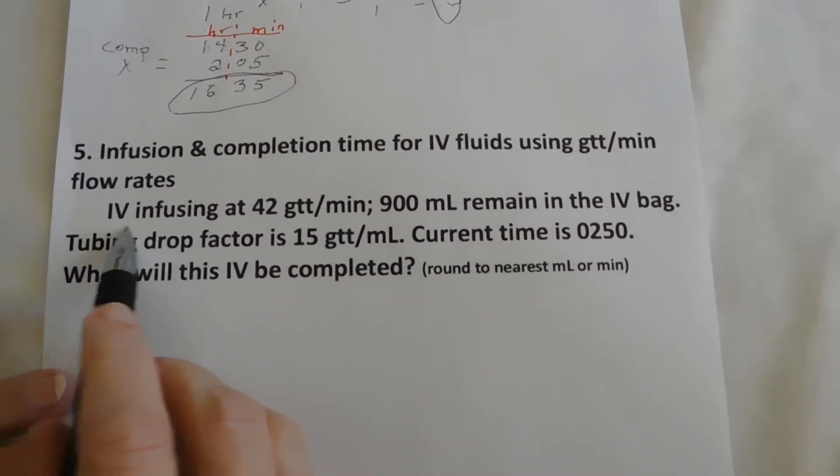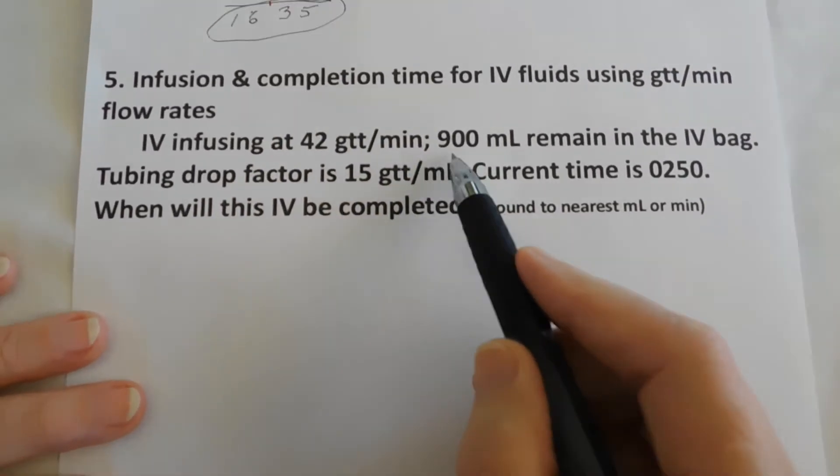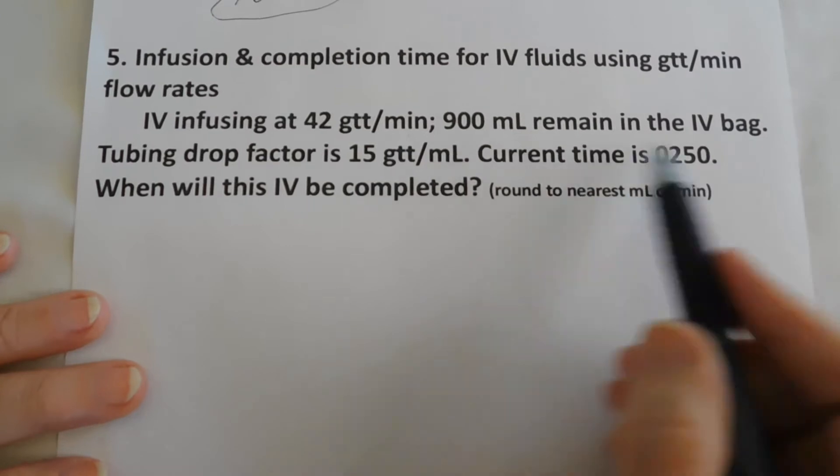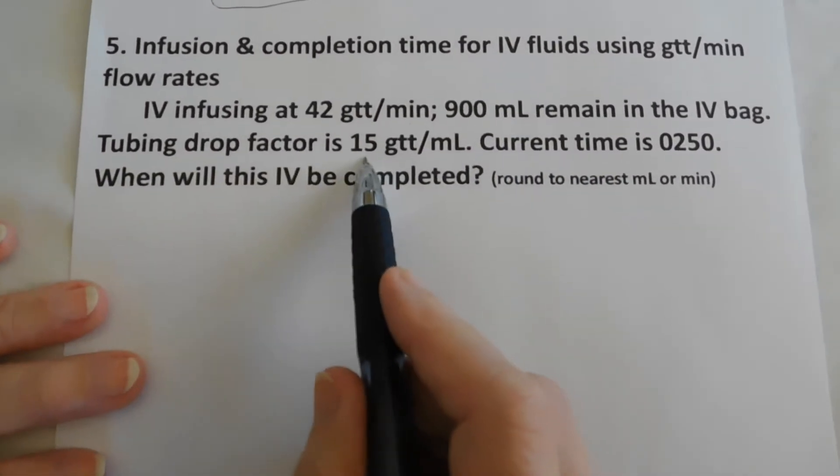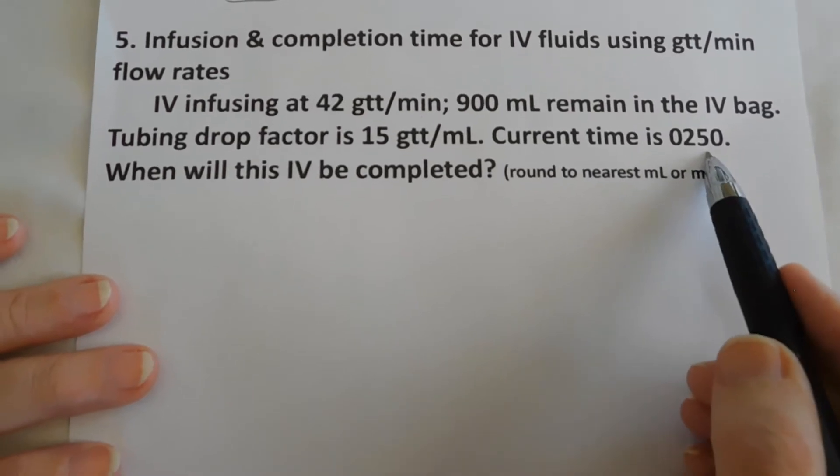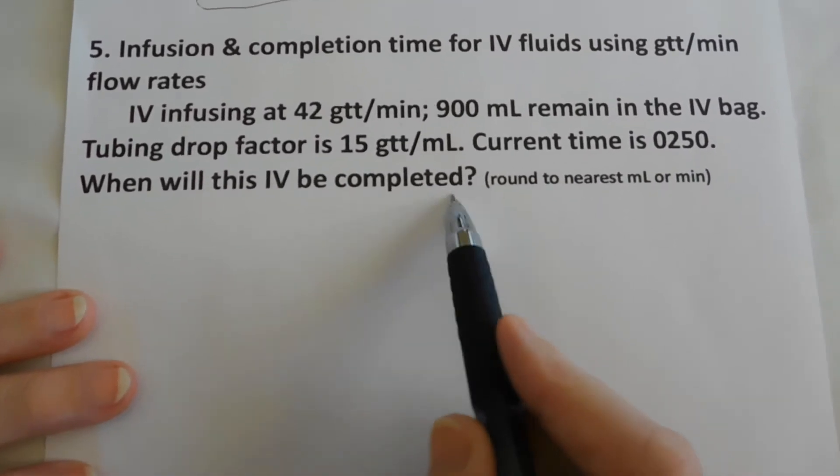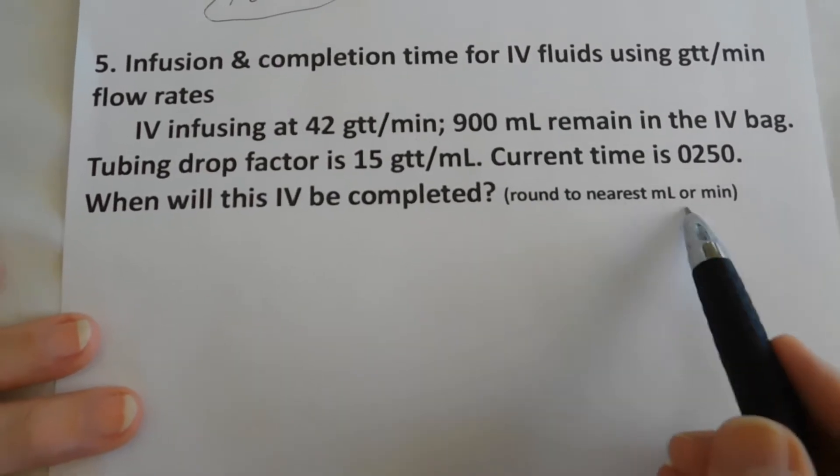In the next problem, our IV is infusing at 42 drops a minute. 900 mils remain in the bag. Tubing drip factor is 15 drops in a mil. Our current time is 0.250. When will this IV be completed? We're going to round to the nearest mil or minute.